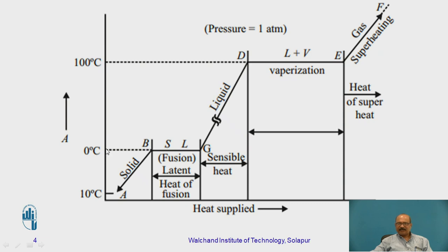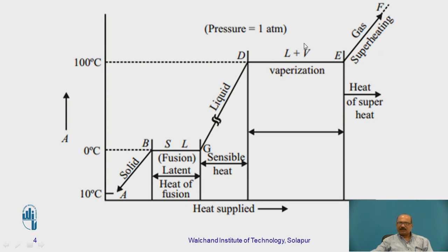Starting at minus 10 degrees centigrade, at 0 degrees centigrade it is in the combined stage of solid as well as liquid. From 0 degrees centigrade up to 100 degrees centigrade, it is in the liquid phase — the water condition. The temperature changes from 0 to 100 degrees centigrade are identified by the thermometer, which is why this is called sensible heat. When water reaches point D, it is converted partially into a vapor stage — a combination of liquid as well as vapor.